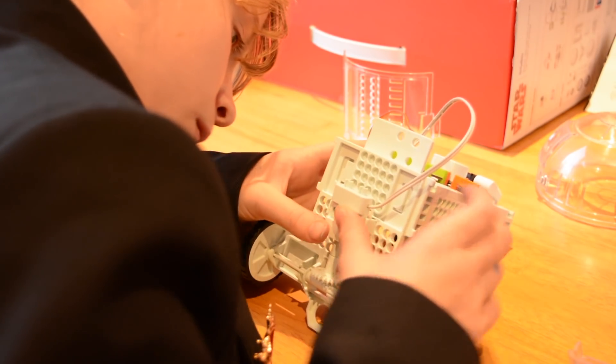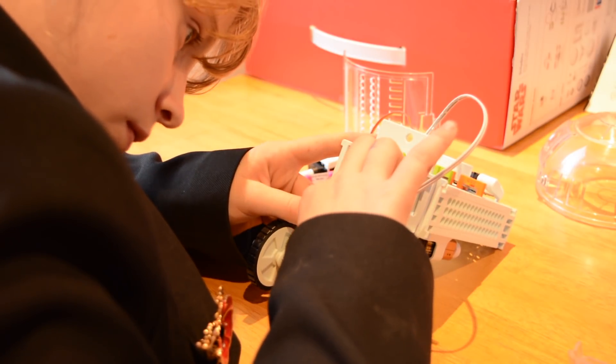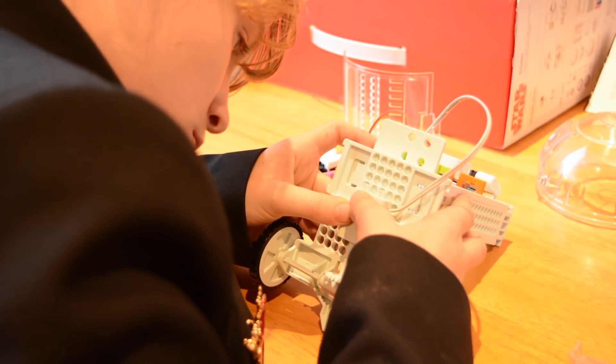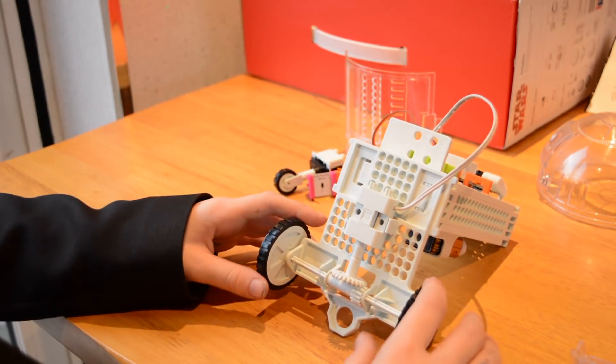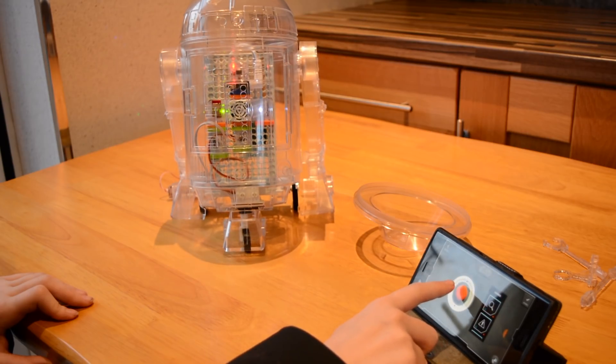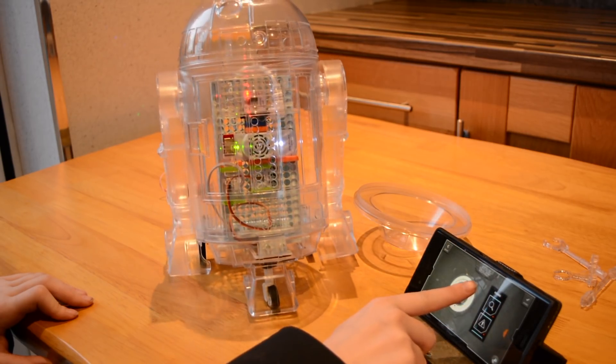Finishing the build can be a bit tricky, and may require some disassembly. Probably the most complicated part of the process is fitting the motor. But once this is done, and the droid's body is fitted, you'll have your very own R2-D2.